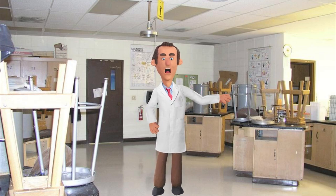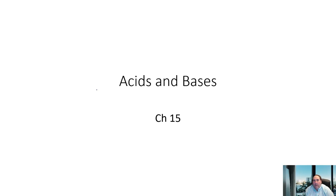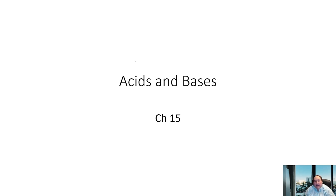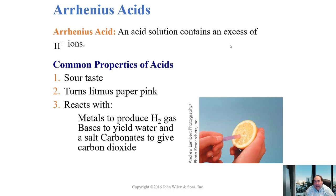Chapter 15: acids and bases — the last chapter of the season. Let's talk about what acids are. An early definition was brought to us by Arrhenius. He said an acid is a solution that contains an excess amount of H+ ions in solution. A couple of symbols used interchangeably in acid-base chemistry: H+ is the hydrogen ion.